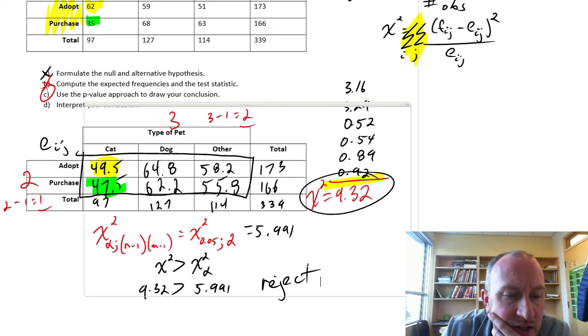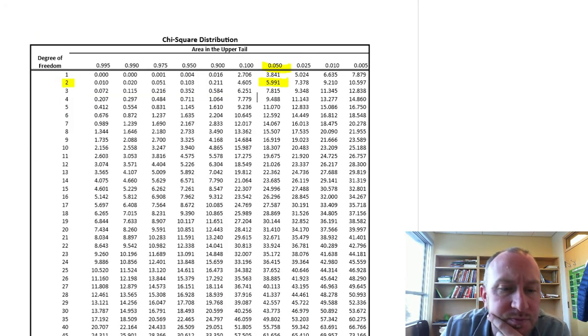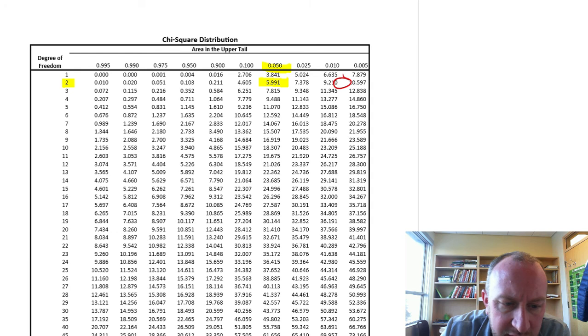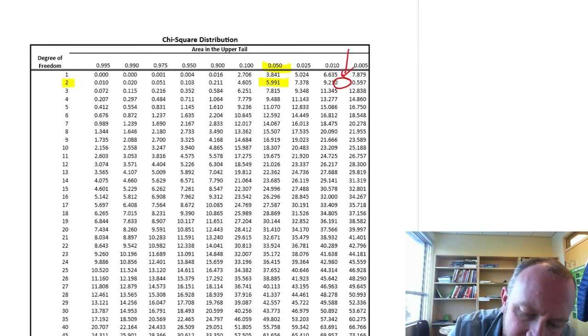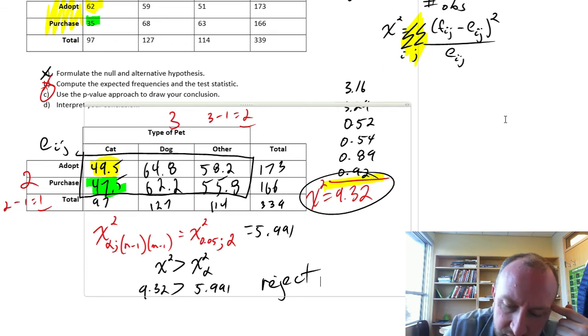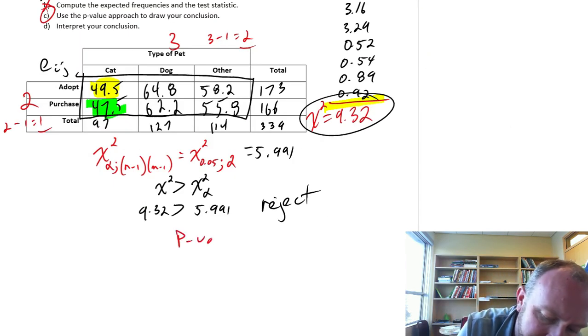If we want the p-value, which I guess the problem actually did ask for the p-value approach, well, our test statistic of 9.3, that's way up here somewhere. So my p-value is somewhere between 0.01 and 0.005. So our p-value is something less than 0.01 greater than 0.005.